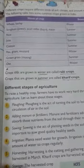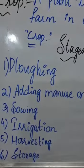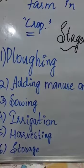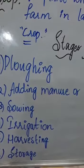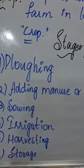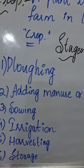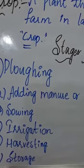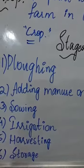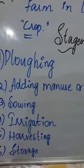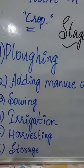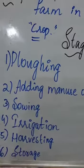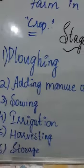Let us see what are the different stages of agriculture. As daily we eat food — ready-made food that is delicious — do you know how this food is prepared? A seed is protected, a new plant grows from that seed, and that is what we eat. To raise a healthy crop, farmers have to work very hard. They go through various stages of agriculture. Let us learn about all these stages one by one.